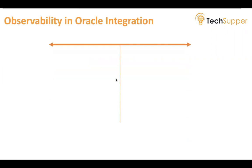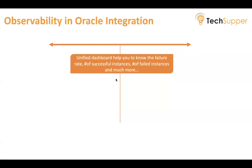Observability in Oracle Integration, which was previously known as the monitoring dashboard, has now been renamed to observability. It is a unified dashboard in Oracle Integration which you use to monitor your runtime integrations. It will help you know the failure rate — how many instances were failed. For example, if you have 100 integrations and 10 get failed, it will show you the failure rate, the percent of successful instances, the number of failed instances, and much more.